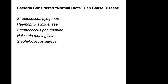Bacteria considered normal biota can also be opportunistic pathogens. Under normal conditions they are part of normal flora, but given the opportunity they can become pathogenic. Examples include Strep pyogenes (strep throat), Haemophilus influenzae (pharyngitis or pneumonia), Streptococcus pneumoniae (pneumonia), Neisseria meningitidis (pneumonia), and Staph aureus.